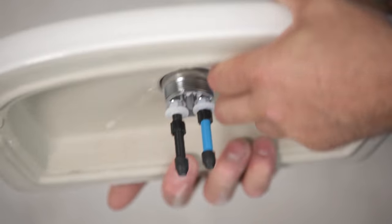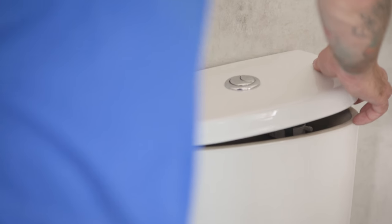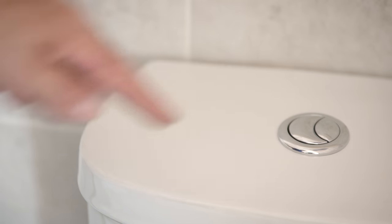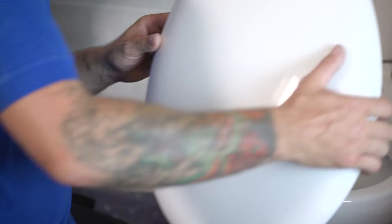Finish fitting the flush mechanism as per the instructions and then secure the cistern lid before testing the flush. Fit the hinges to the toilet seat and then attach it to the pan using the fixings provided.